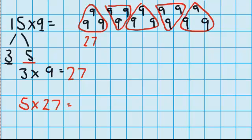And I know that 5 times 27 equals 135. So 15 times 9 must equal 135.